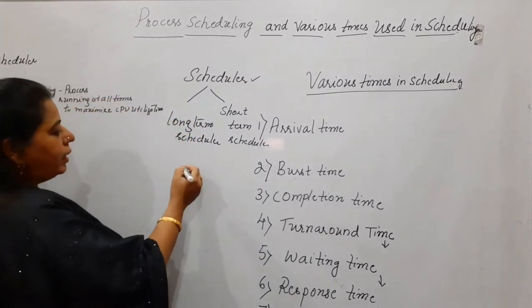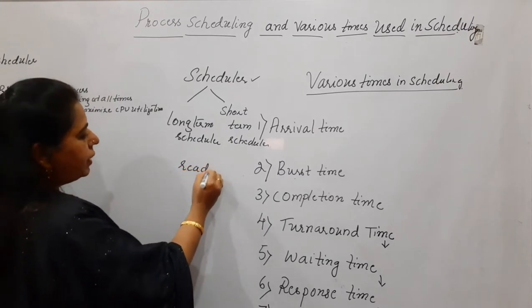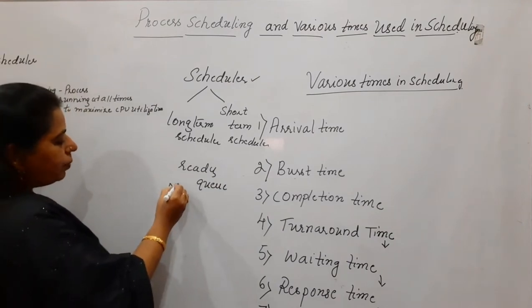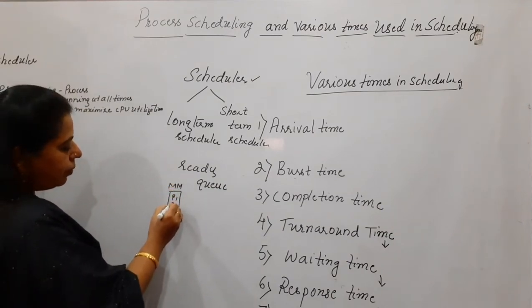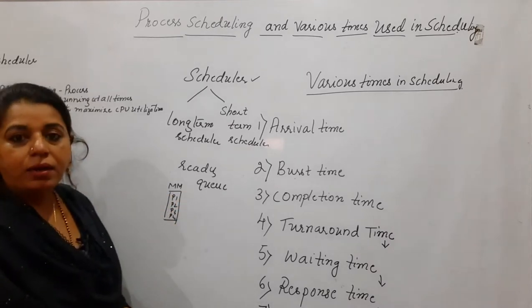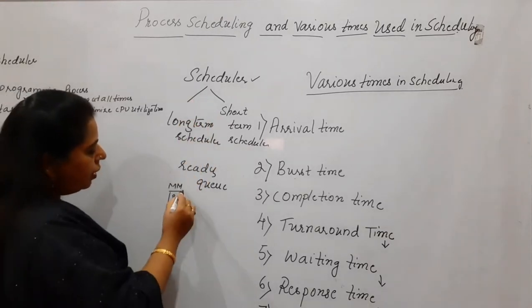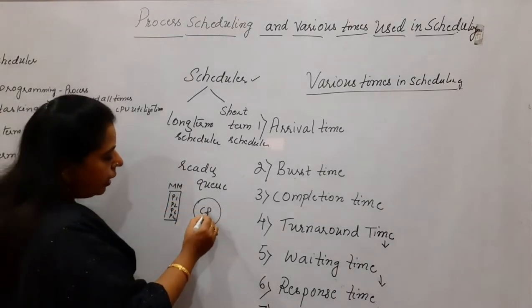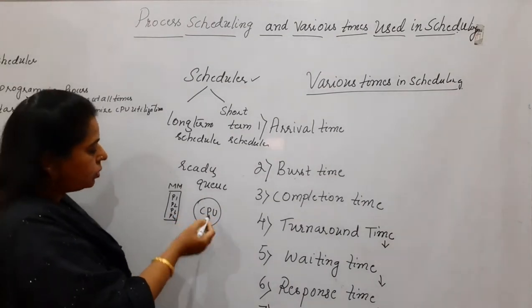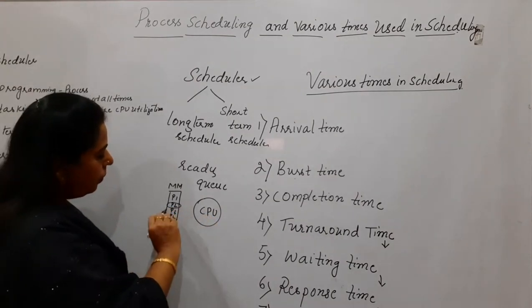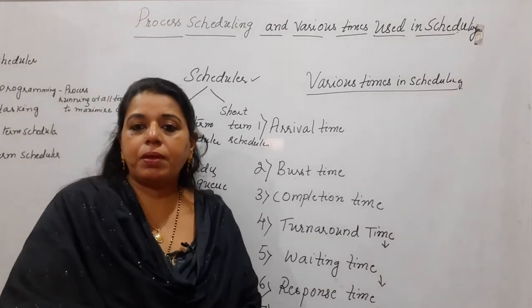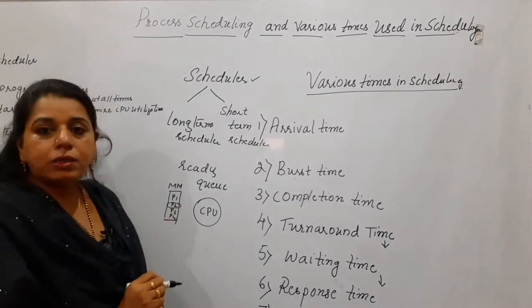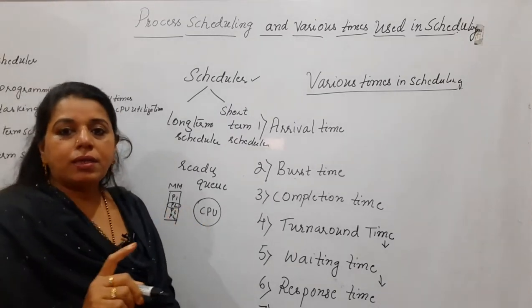In simpler words, the ready queue is nothing but your main memory. The processes are present in the main memory — P1, P2, P3 — and the job of the scheduler is to pick one of these processes from the memory and allocate the CPU resource to that process. For example, picking process P2 from main memory and assigning the CPU to process P2 for execution — this is called the scheduler.